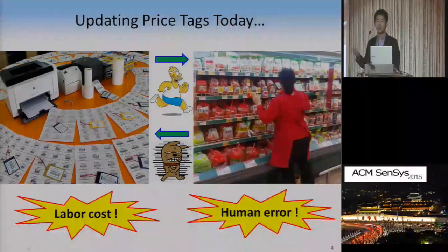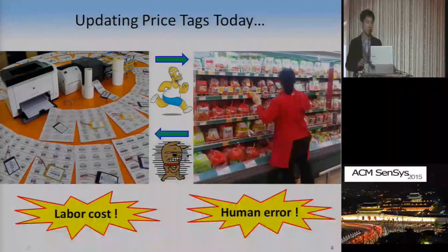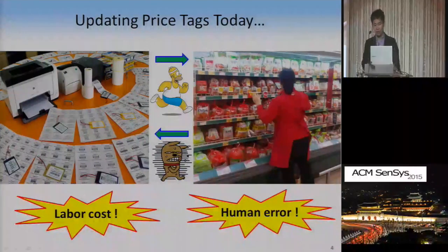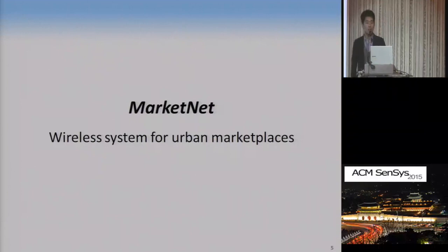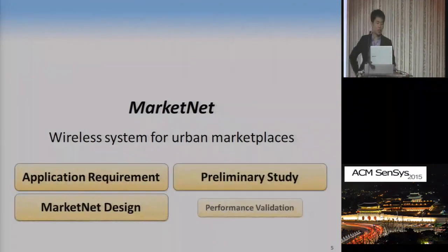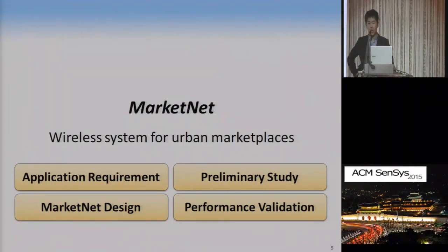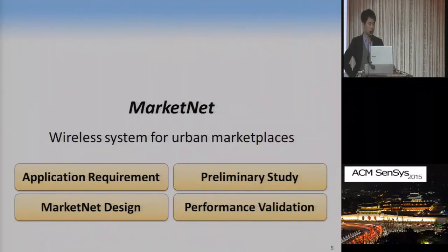However, we had little knowledge of market environments, nor were we confident that previously proposed network architectures would be the ideal choice for these environments. For this reason, we investigate link characteristics in markets and propose a network architecture for these environments. We call this MarketNet. I'll start from the application scenario and its requirements, go to a preliminary study in market environments, then describe the MarketNet design and performance validation.